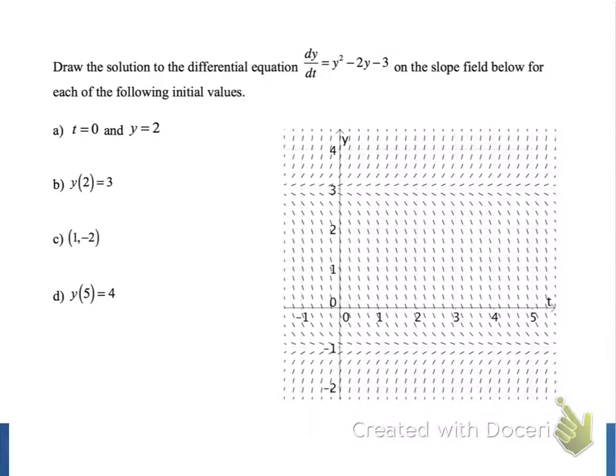Our differential equation is dy/dt equals y squared minus 2y minus 3. In a previous screencast, we drew a slope field by hand so we could see a graphical representation of solutions to the differential equation. For this example, I created the slope field using GeoGebra software, so that our slope field has many more mini tangent lines than the one we drew by hand, and this is going to make our job of drawing solutions easier.